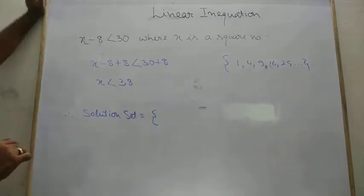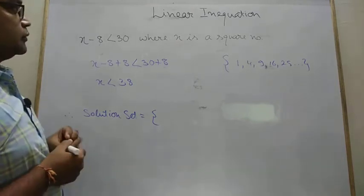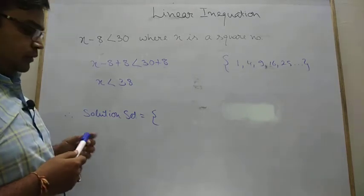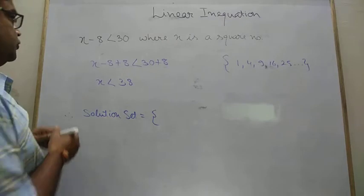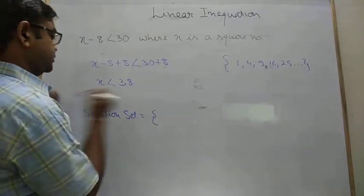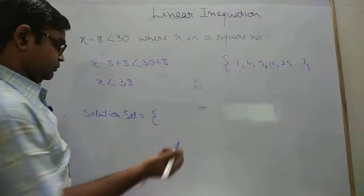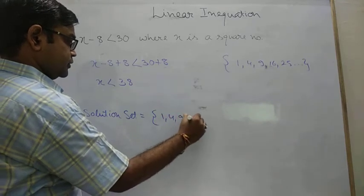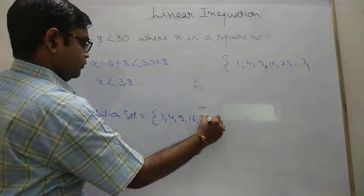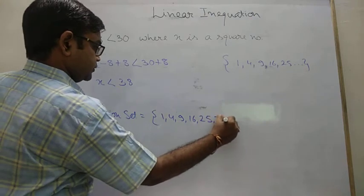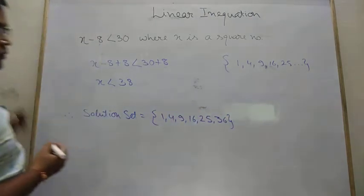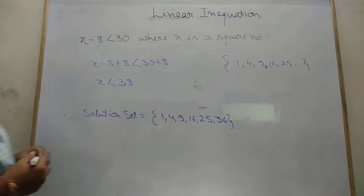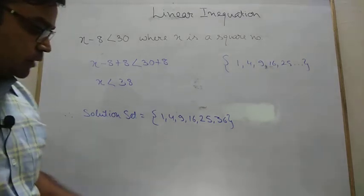Always remember that in case of a square number, we use, we never use negative numbers. Because negative numbers are not square numbers. So 1, 4, 9, 16, 25 and 36. So these are the solution set. Hope this concept is clear to you.